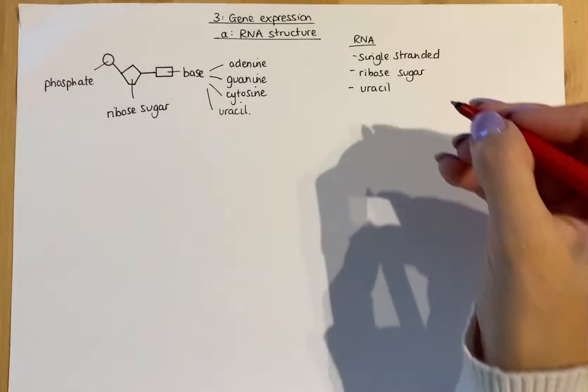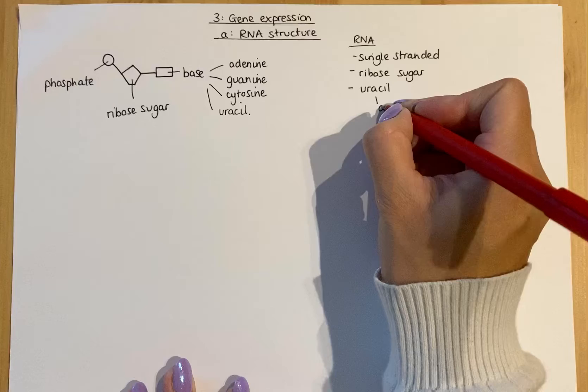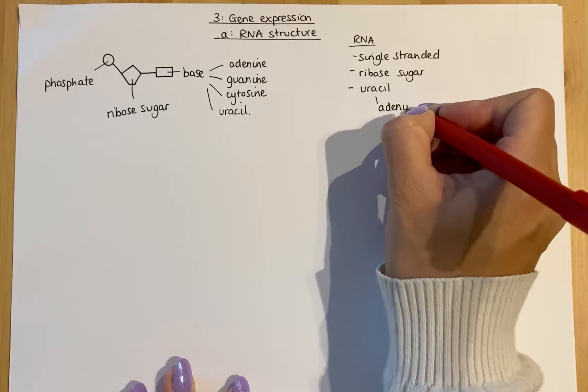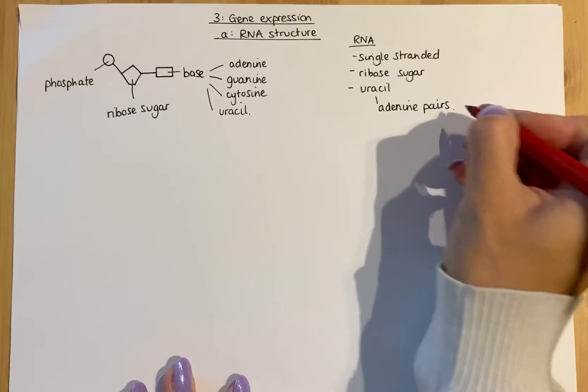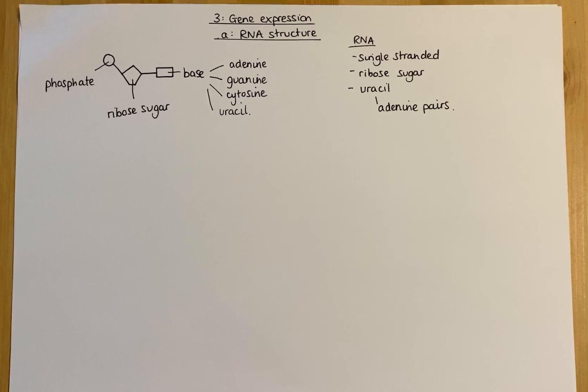In terms of base pairing, adenine pairs with uracil. Cytosine and guanine still pair together, but with RNA it's adenine pairing with uracil.